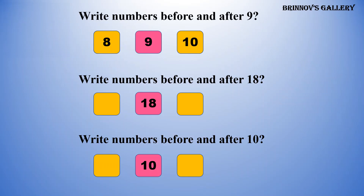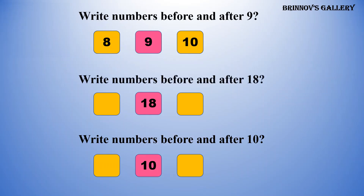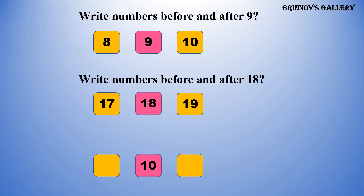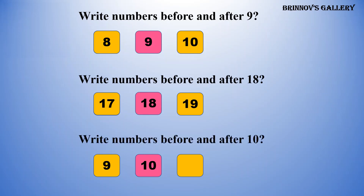Write the numbers before and after: 18 — 17, 18, 19. Write the numbers before and after: 10 — 9, 10, 11.